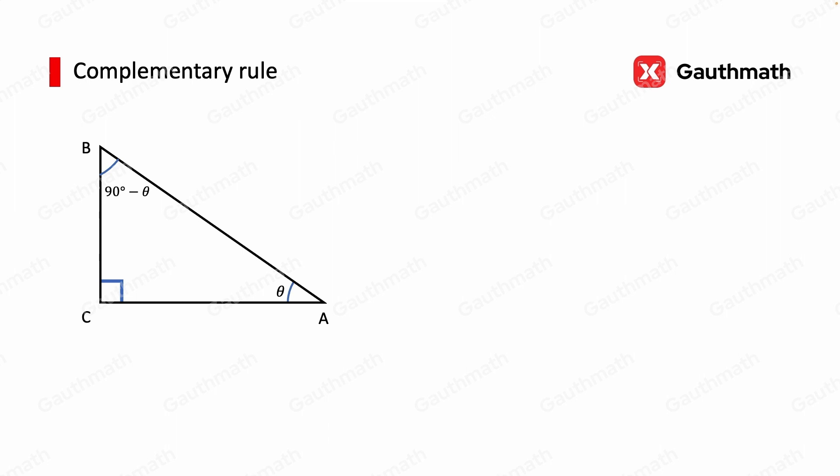Another rule you have to know for the SAT is called the complementary rule. Suppose you have a right angle triangle ABC and call angle A theta. Then angle B would be 90 minus theta. We know sine theta is equal to the opposite divided by the hypotenuse, so in our case, it would be BC over AB.